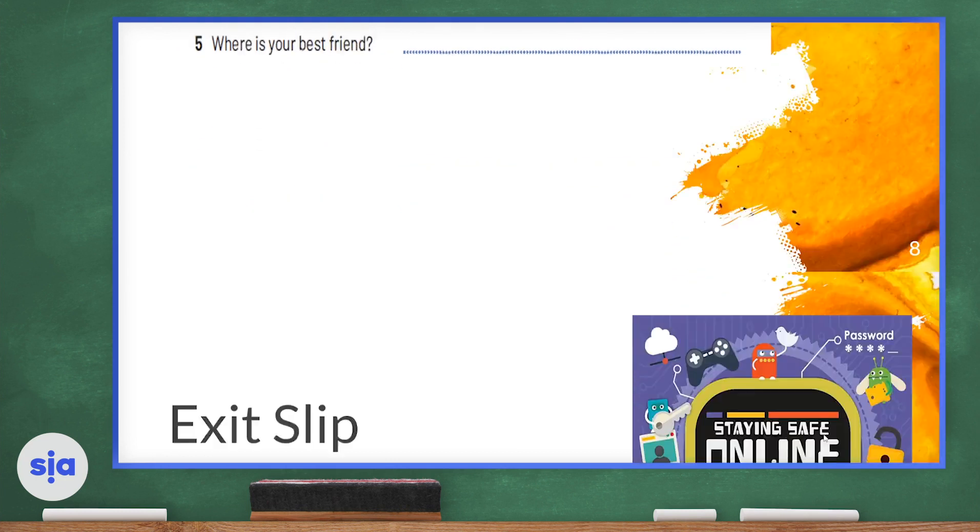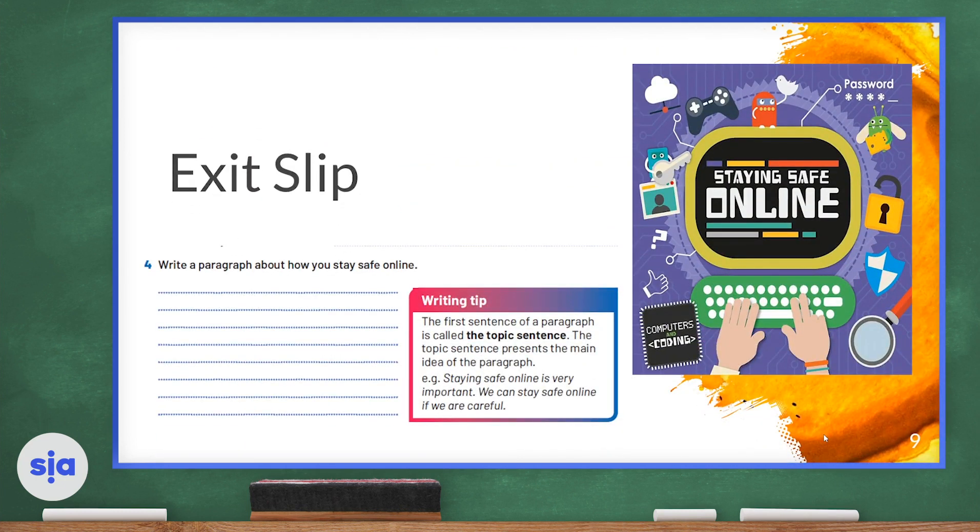Now for our exit slip, I want you to write one paragraph about how to stay safe online. The first sentence of a paragraph is called the topic sentence. The topic sentence presents the main idea of the paragraph, so 'staying safe online is very important. We can stay safe online if we are careful.' I want you to think about everything we talked about about online safety and write down a paragraph. Remember to use capital letters correctly along with punctuation marks. Make sure you use the correct verb forms. Thank you guys, that's a wrap. Have a wonderful day.